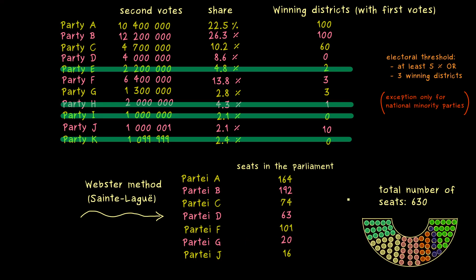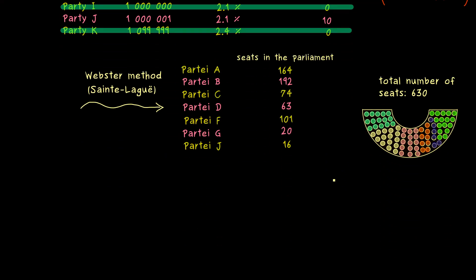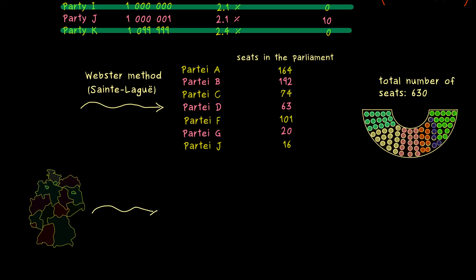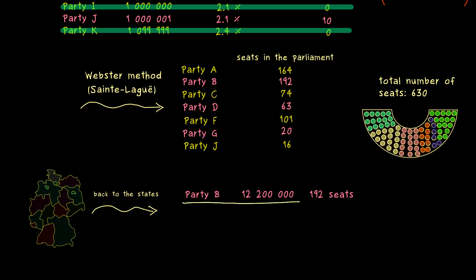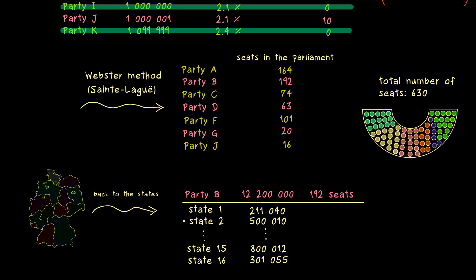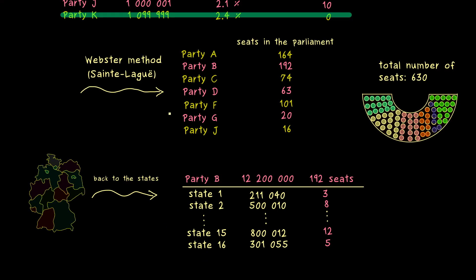After these steps, the proportions of the parties in the parliament are already fixed — the parties know how strong they are — but now we have to fill the seats with people. In the first step we go back to the state level to see how the seats distribute over the states. This can be done for each party separately because we know how the second votes distribute over the states. We list all 16 states and the corresponding second votes for the given party, then apply the Webster method again to get the correct distribution of seats over the states.